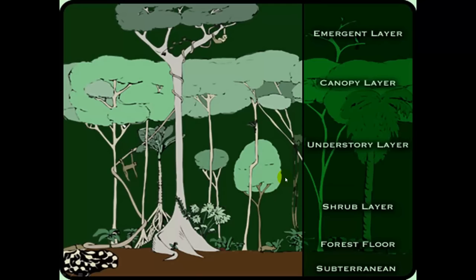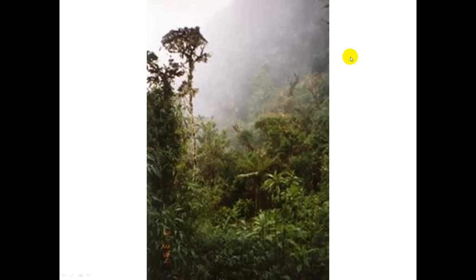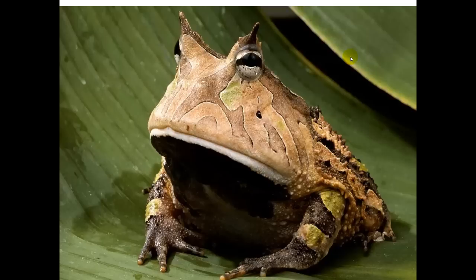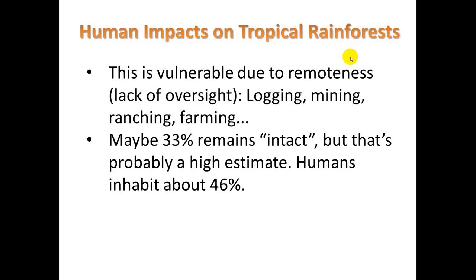Here are some pictures. Here are the canopies I spoke about, and a diagram — you do not need to know the names of the layers. We can see different plant species reaching out for sunlight, which is the main competition here. There are many exotic species and very high biodiversity. This area is pretty vulnerable because it's remote, so there's not a lot of oversight — logging, mining, ranching, and farming can go on. About 33% remains intact, though that's probably a high estimate. These areas really require protection as hotspots for biodiversity.